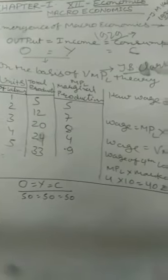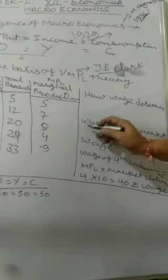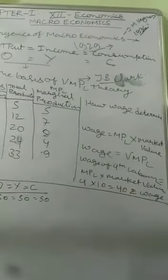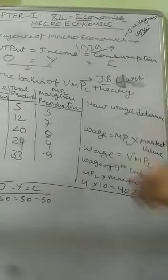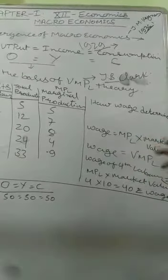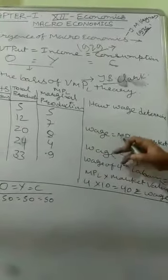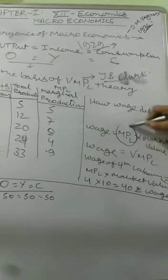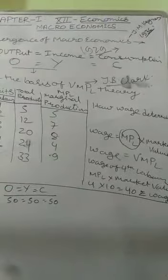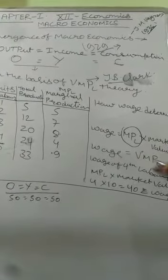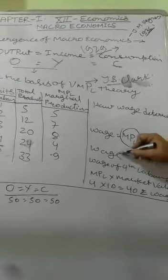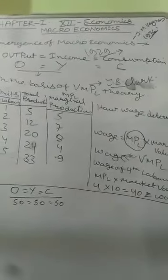Suppose we have to determine the wage, then wage determination will be: wage equals marginal productivity of labor (MPL) into the market price of the product they're producing. So wage equals MPL into market price. Then if we have to determine the wage of the fourth labor, we calculate MPL of fourth labor into market value.